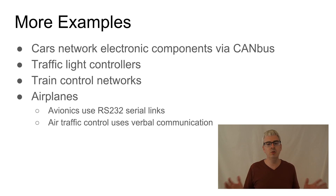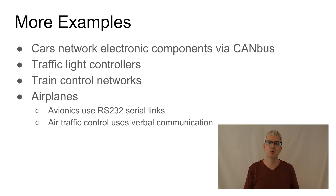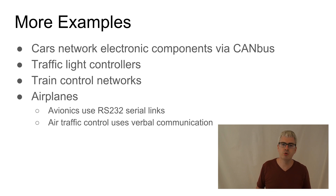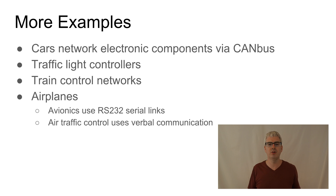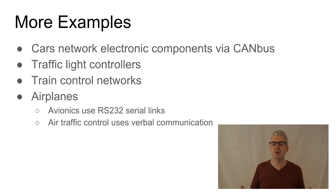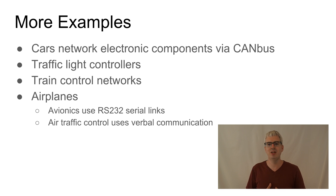Distributed systems are used elsewhere in transportation too. Traffic lights in large cities are often networked together in order to smooth traffic flows across the city in a hopefully fault-tolerant fashion. Train control networks are used to make sure that trains run on time and that two trains don't end up on the same track at the same time.